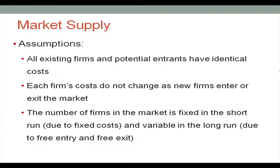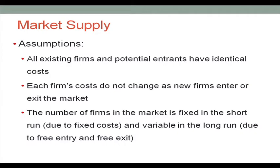Third, we assume that the number of firms in the market is fixed in the short run — because of fixed costs firms can shut down but they do not exit the market. In the long run the number of firms is variable due to free entry and exit. Firms running at a loss will easily exit the market, and new entrants hoping for potential profit can enter the market. This is a realistic assumption.